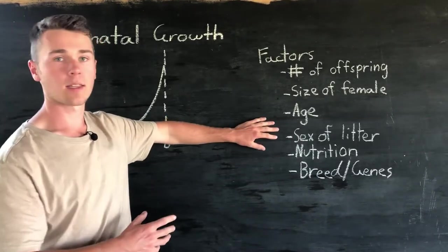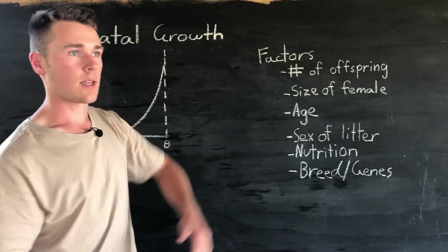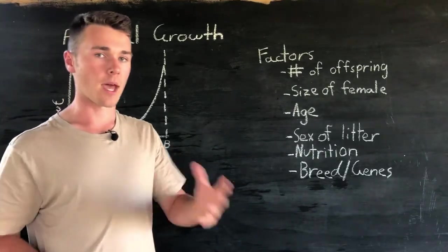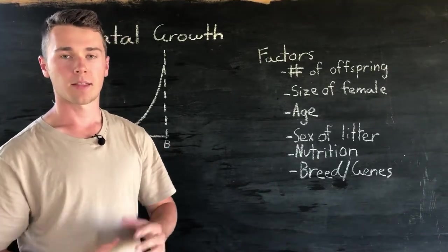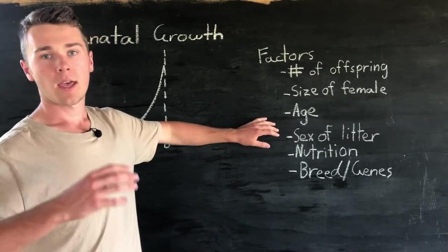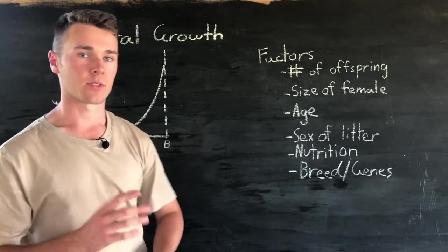Next we have the sex of the litter members. Now if it's a single birth and it's a male, the male tends to be bigger than the female. But in multiple births males and females tend to be similar sizes.